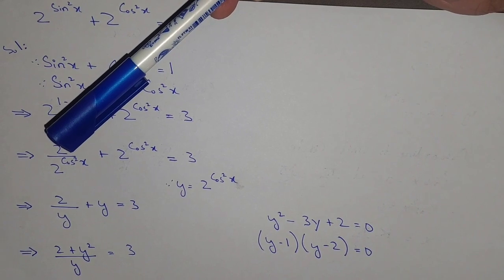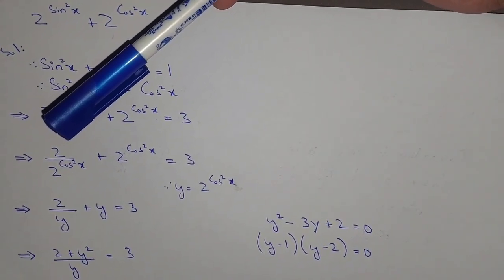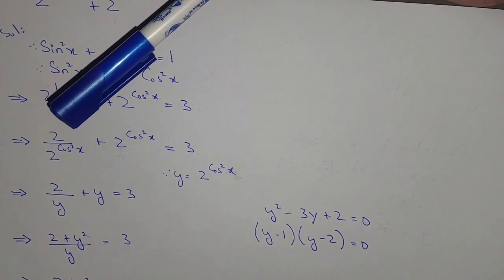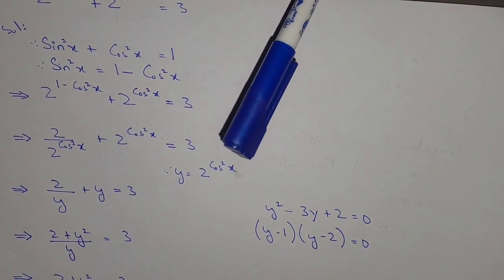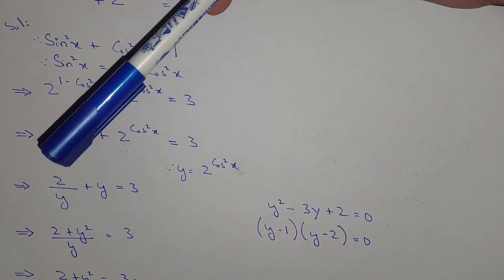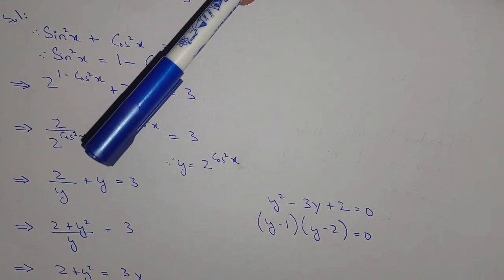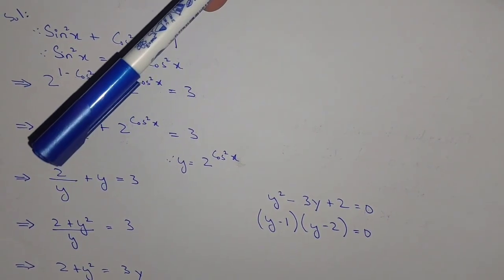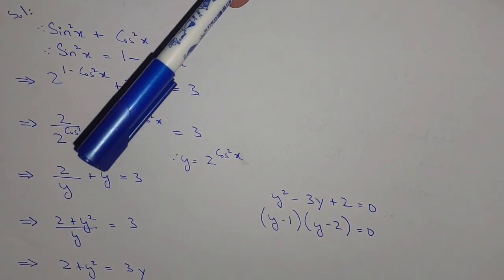Now keeping y = 2^(cos²x), we get 2/y + y = 3. This can be written as (2 + y²)/y = 3.